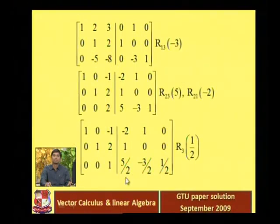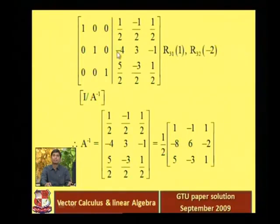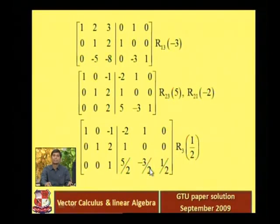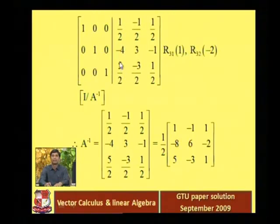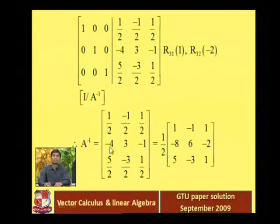We multiply the third row by 1 and add into the first row: minus 2 + 5/2 = 1/2; 1 minus 3/2 = minus 1/2; 0 + 1/2 = 1/2. So the first row becomes 1/2, minus 1/2, 1/2. Therefore the inverse of the matrix A-inverse equals: [1/2, -1/2, 1/2], [-4, 3, -1], [5/2, -3/2, 1/2].